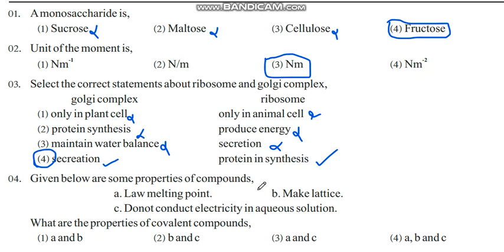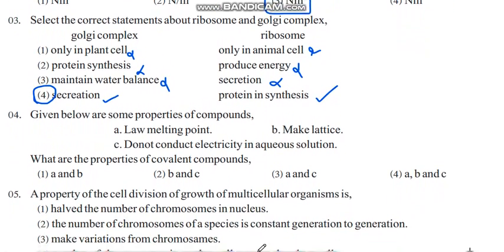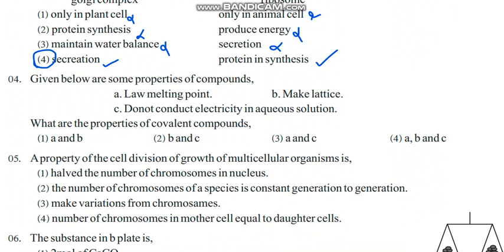Given below are some properties of compounds: low melting point, make lattice, do not conduct electricity in aqueous solution. There are two types: ionic compounds and covalent compounds. Low melting point is usually covalent compound. Do not conduct electricity in aqueous solution - yes, that is covalent compound. So a and c are the properties of covalent compounds.